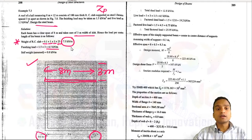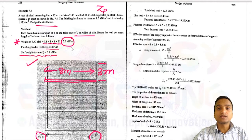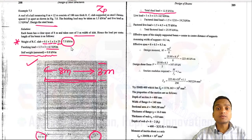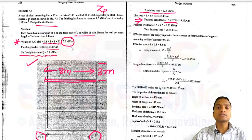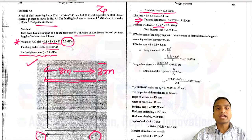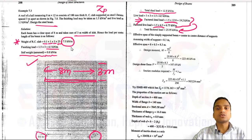Assuming self-weight of the I-beam as 0.8 kN/m, total dead load is 12.8 kN/m. Live load is 4.5 kN/m. Factored dead load is 1.5 × 12.8 and factored live load is 1.5 × 4.5. The total factored load comes out to be 25.95 kN/m.